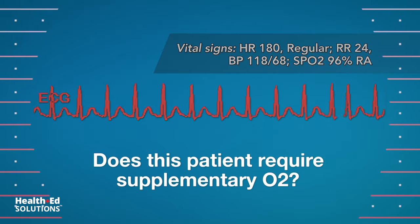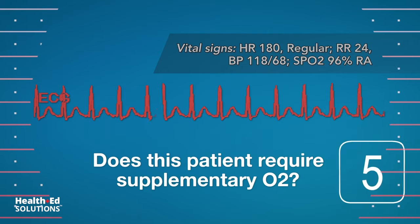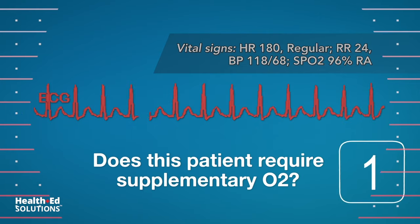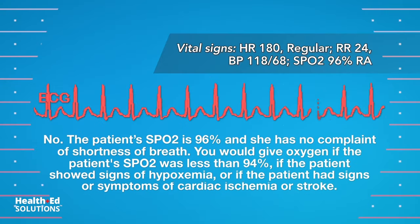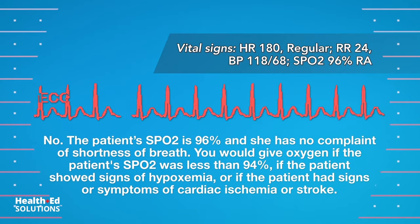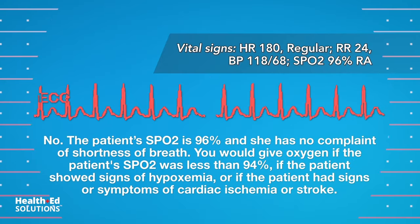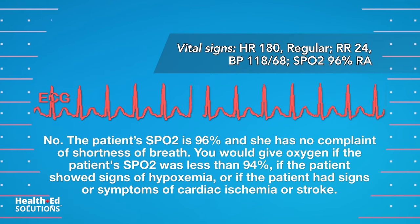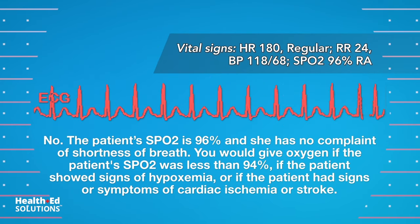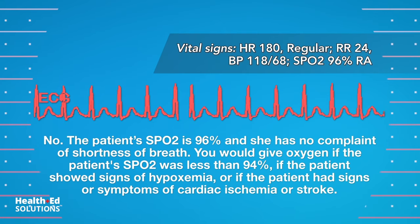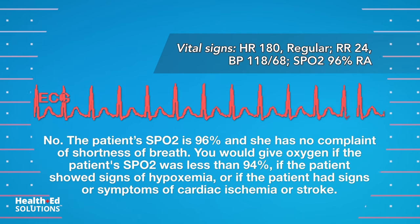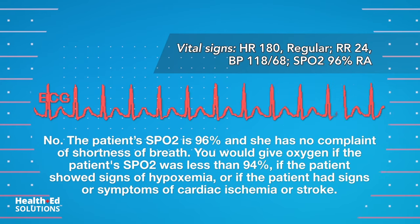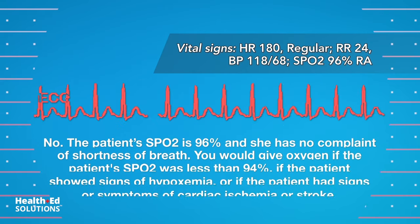Does this patient require supplementary O2? No. The patient's SpO2 is 96% and she has no complaint of shortness of breath. You would give oxygen if the patient's SpO2 was less than 94%, if the patient showed signs of hypoxemia, or if the patient had signs or symptoms of cardiac ischemia or stroke.